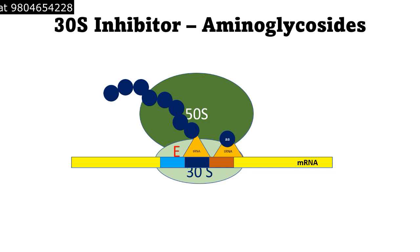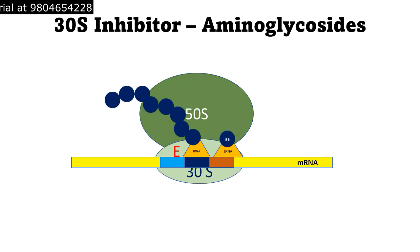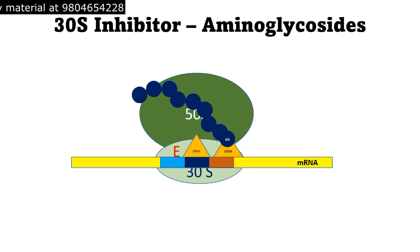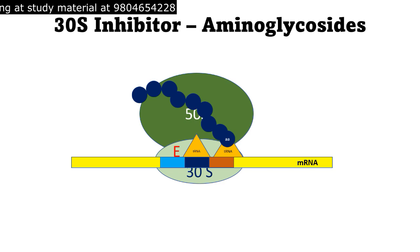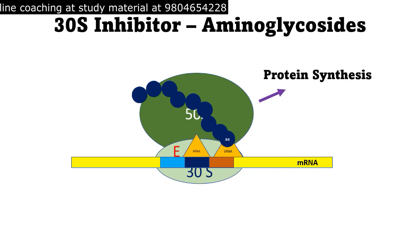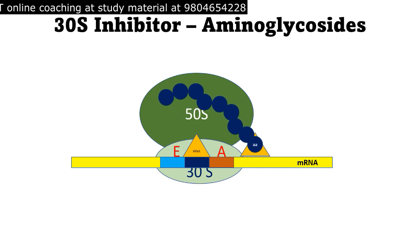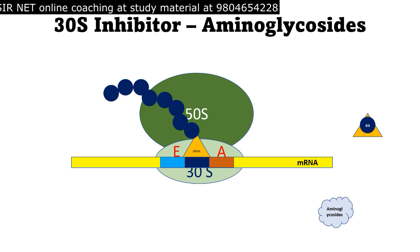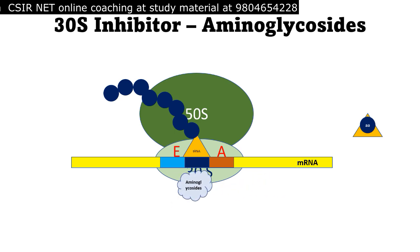A charged t-RNA — also called aminoacyl t-RNA — brings a new amino acid to the A-site. Then peptidyl transfer activity occurs: the polypeptide chain is transferred from the t-RNA of the P-site to the t-RNA of the A-site. Peptide bond formation occurs, followed by translocation, where the ribosome moves one codon unit forward in the 5-prime to 3-prime direction, progressing protein synthesis. Now, what happens when aminoglycosides are present?